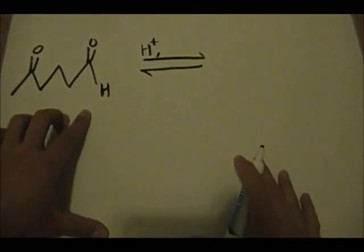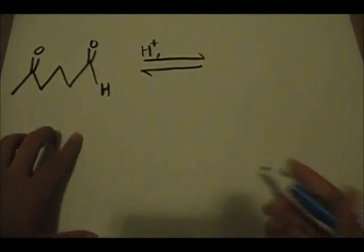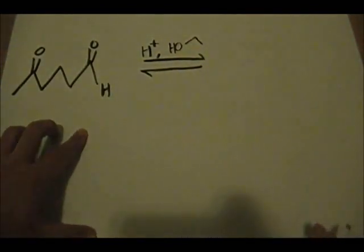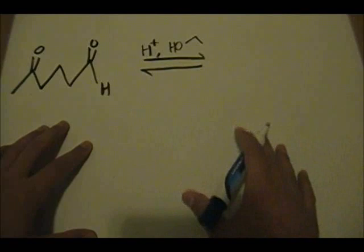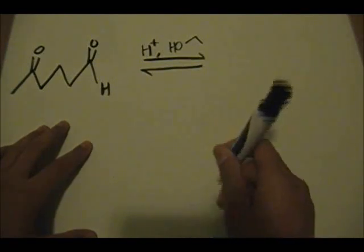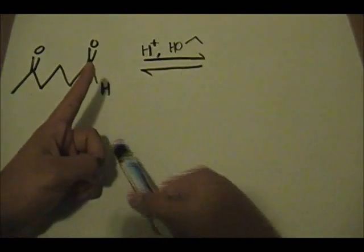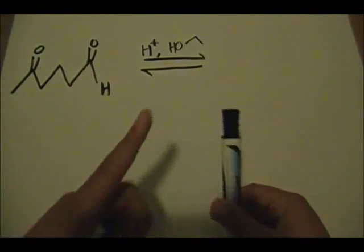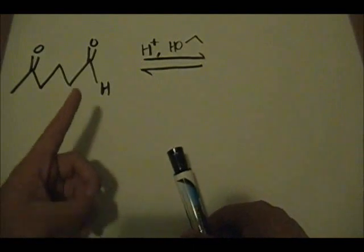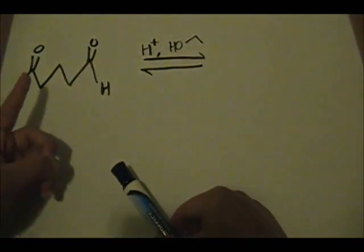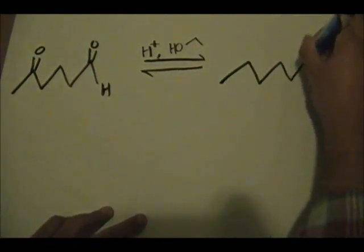When we're trying to protect the aldehyde functional group, we can use any type of alcohol, because at the end we're going to regenerate the aldehyde anyway. I'll use a simple primary alcohol. One important thing to note: aldehydes are more reactive than ketones. So if you provide the starting material with only one equivalent of the acetal-forming reagents, the acetal will only form at the aldehyde position — since the aldehyde is more reactive, it reacts preferentially.